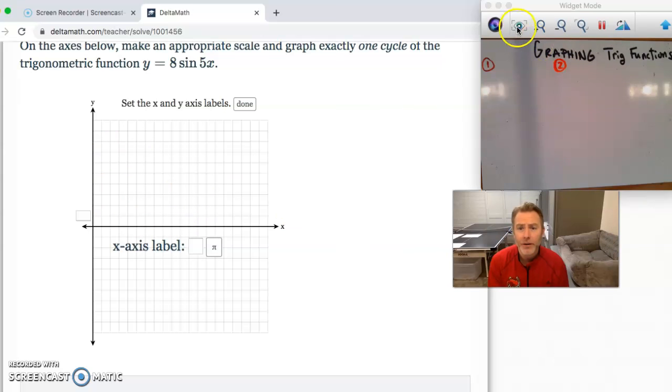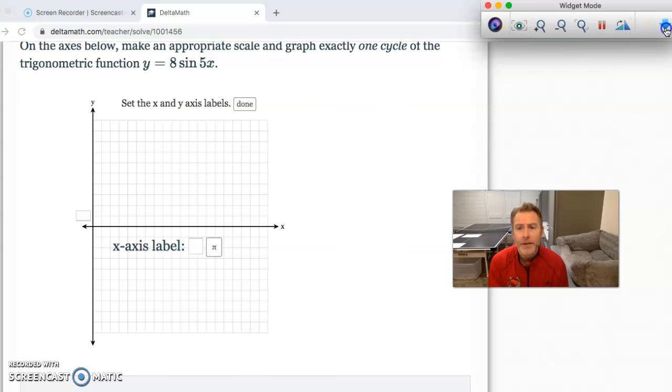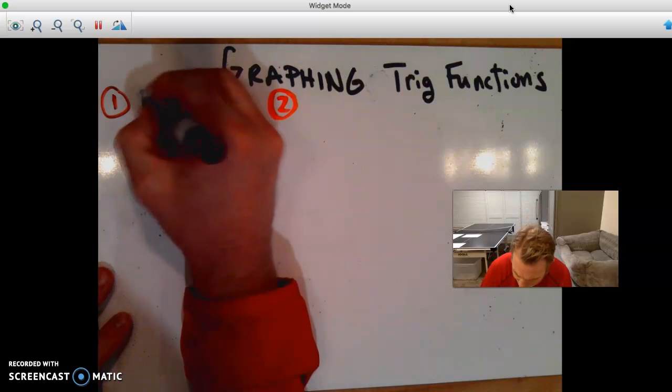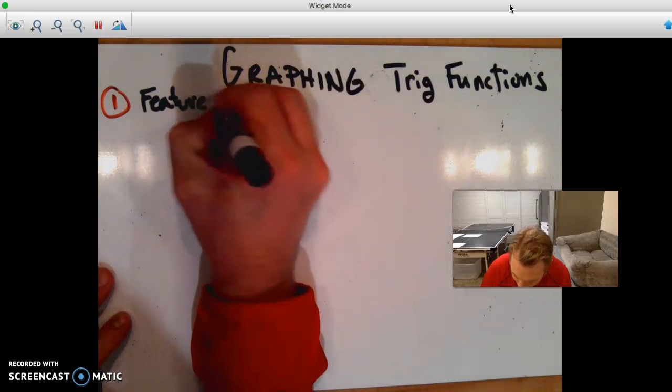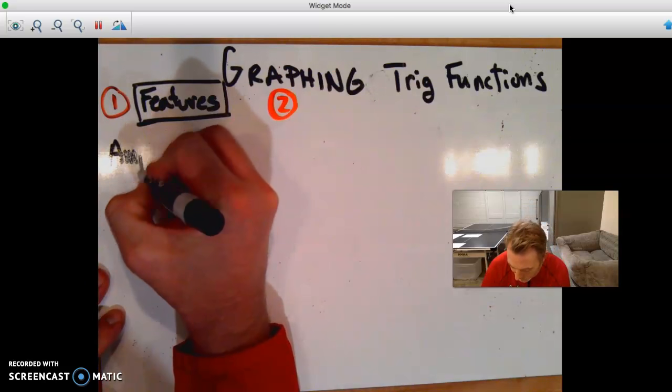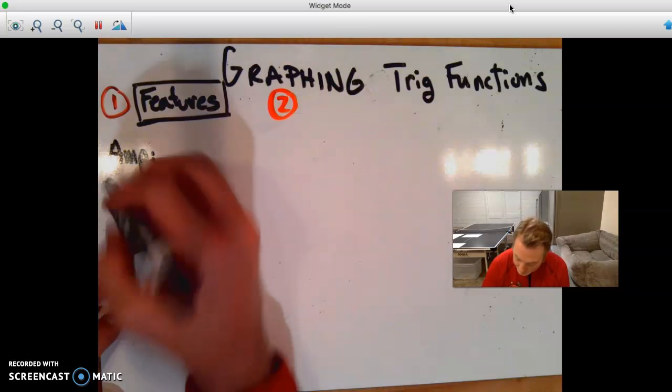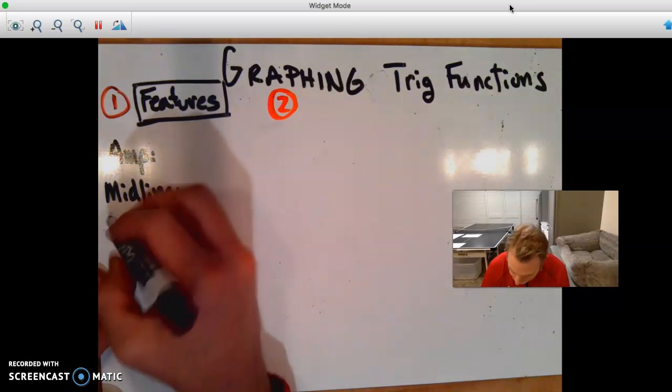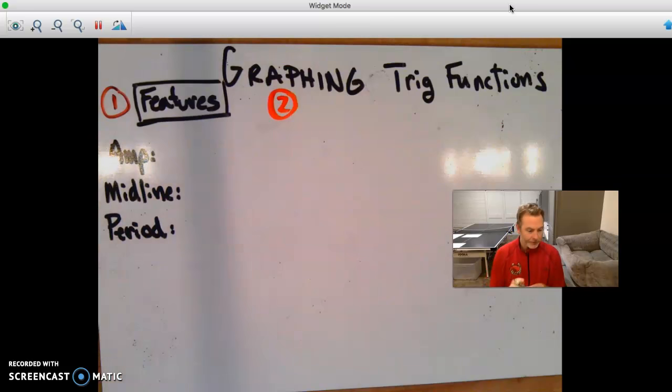So what I want to start with is this idea that there are two things we need to do when we're graphing these. And so you probably want some scratch paper at some point. But the first thing we're going to do is we're going to look at its features. And these are the things that I'm thinking about for features, starting with amplitude. Then moving to midline. And also period.